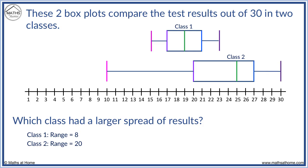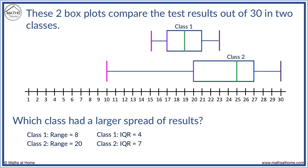We will also look at the interquartile range. Class 1 has a Q3 of 21 and a Q1 of 17. 21 minus 17 equals 4, so the interquartile range is 4. Class 2 has a Q3 of 27 and a Q1 of 20, giving an interquartile range of 7. Therefore, the spread of the middle 50% is larger in Class 2. Overall, Class 2 has the larger spread.